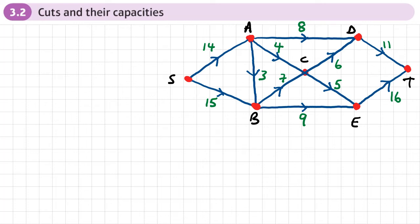This is the second section of Chapter 3, Flows in Networks 1, and this section is about cuts and their capacities. So here's an example of a capacitated directed network digraph. And what I can do is draw a line that cuts across some of these edges. So let's say I draw something like this.